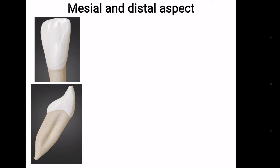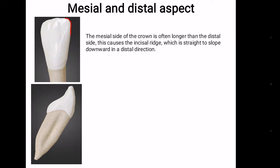Mesial and distal aspect: The mesial side of the crown is often longer than the distal side. This causes the incisal ridge, which is straight, to slope downward in a distal direction.